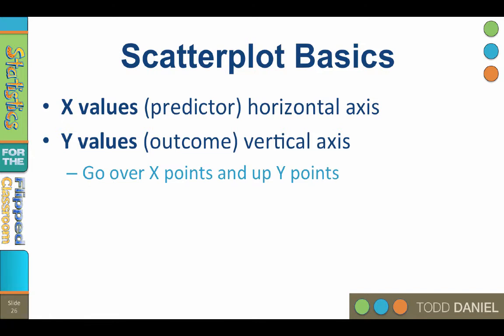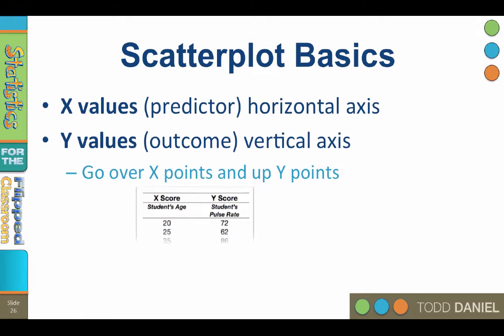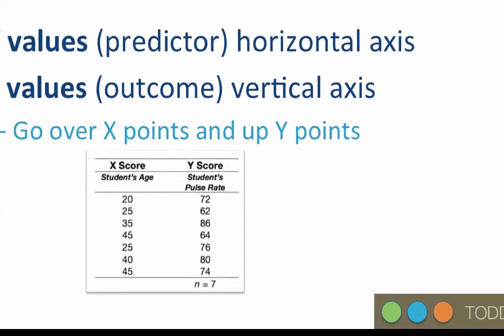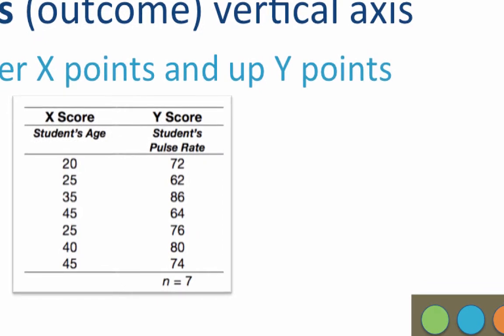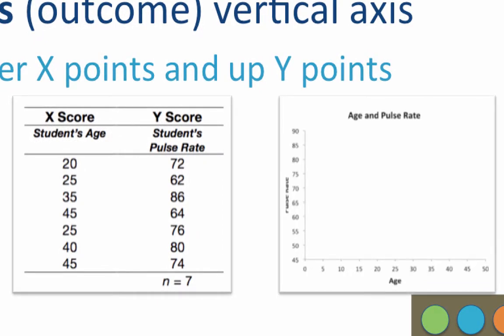You begin your scatter plot by plotting each pair of x and y values or coordinates. You go over x points and up y points. Each pair of scores is represented by a single point, and n equals the number of pairs of scores. In this simple example, we have seven pairs of scores for students' age and their pulse rate. We will create a scatter plot by placing age on the x-axis and pulse rate on the y-axis, to see if age predicts pulse rate.